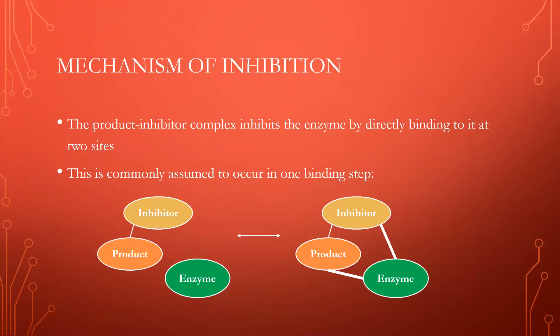So, how does this complex actually inhibit? The product-inhibitor complex binds to the enzyme at two sites. This creates a stronger complex in which the enzyme cannot activate more product because it is no longer unbound. This is what reduces the number of blood clots in the system.